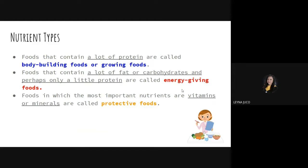We can also categorize nutrient types. Foods that contain a lot of proteins are called bodybuilding foods or growing foods. Foods that contain a lot of fat or carbohydrates and perhaps only a little protein are called energy-giving foods — such as carbohydrates like sugar or grains, and fats. Foods in which the most important nutrients are vitamins or minerals are called protective foods.